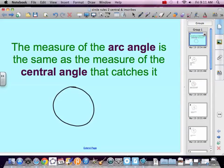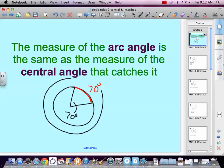So if we have this central angle and let's say that it's 70 degrees, the arc angle that it catches is also 70 degrees. It does not matter how far away that circle is. If I have another circle going around at the same center and that 70 degree arc, that 70 degree angle is catching it, then that one is also 70 degrees.